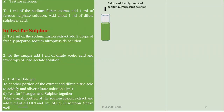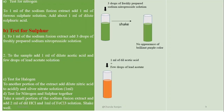Now we test for sulfur. We take 3 drops of freshly prepared sodium nitroprusside solution, shake it — no appearance of brilliant purple color, showing the absence of sulfur. We also perform the lead acetate test: we add 1 ml of dilute acetic acid and 2 drops of lead acetate and heat it. No appearance of black precipitate — this confirms sulfur is absent.